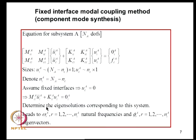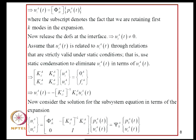We perform an eigenvalue analysis associated with this fixed-interface equation to determine the system natural frequencies and mode shapes. Using the modal matrix of the fixed interface system, we represent the solution in terms of modal coordinates P_K^A, where the subscript K denotes that we retain only K modes out of the available modes, thereby achieving a modal reduction.